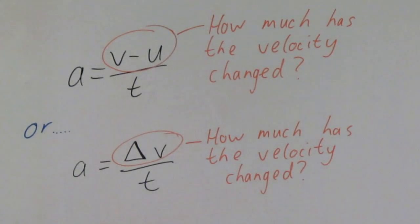Let me show you. That top term, v minus u, that's just a way of working out how much the velocity has changed by. That bottom term, that delta v, that just means how much has the velocity changed by.